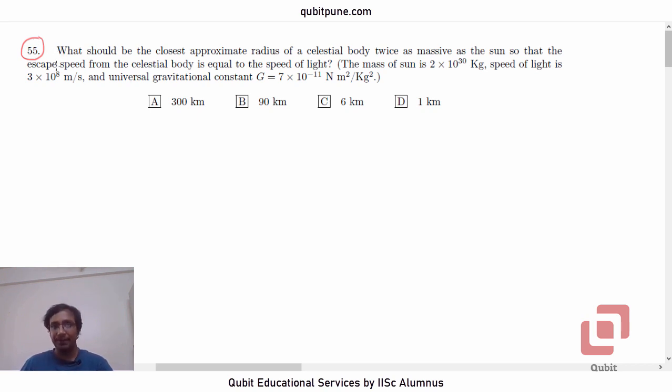This problem is based on gravitation. What should be the closest approximate radius of a celestial body twice as massive as the sun so that the escape speed from the celestial body is equal to the speed of light? The mass of the sun is 2×10^30 kg, speed of light is 3×10^8 m/s.